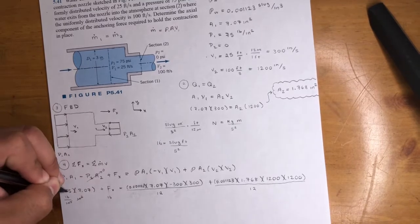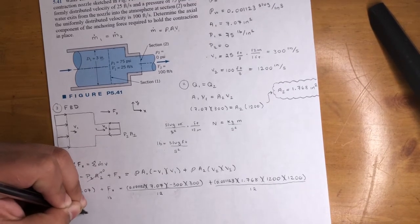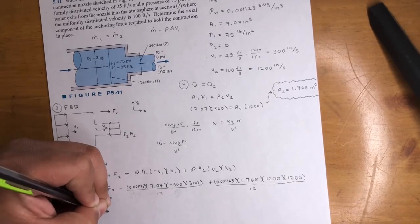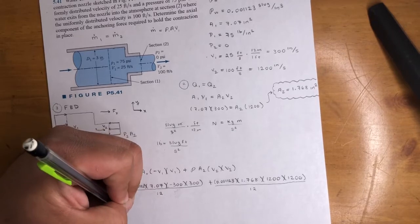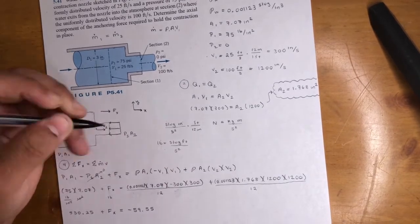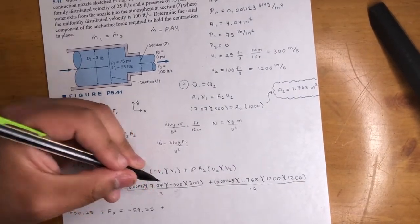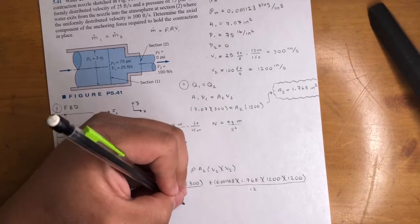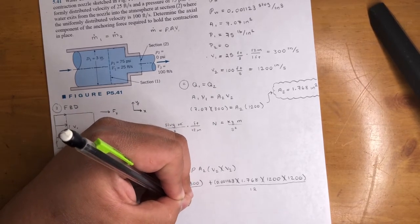So, do the math. 75 times 7.07, that is 530.25 plus Fx. If you do the math here, you will get negative 59.55 plus, because it's a negative, right? It is a negative. And, plus 238.26.